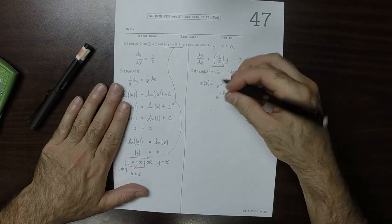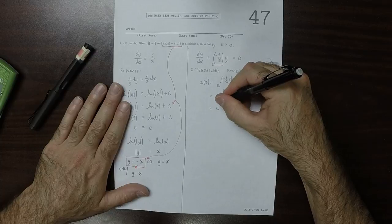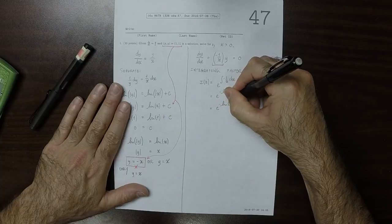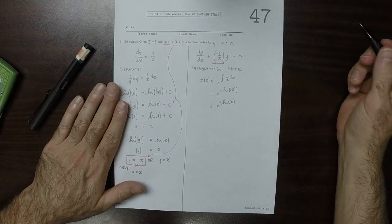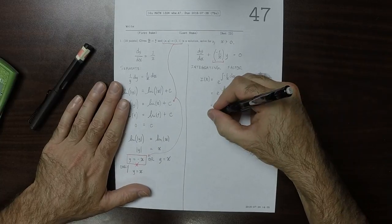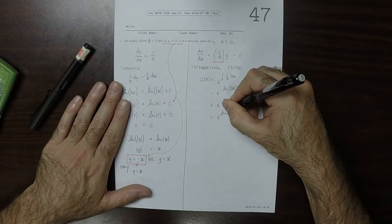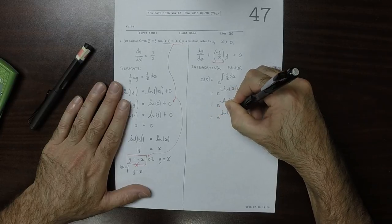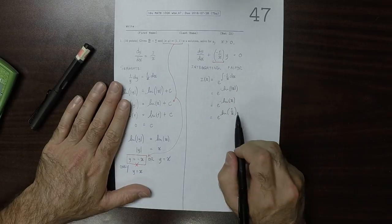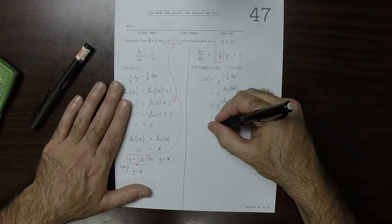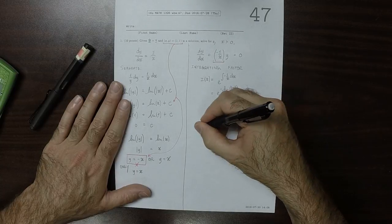However, we can drop the absolute value of x because we have the simplifying assumption that x is positive. So this is exponential of log of 1 over x. So that is bringing the negative inside, so 1 over x is x to negative 1. So this is just 1 over x, because the exponential and the log cancel.